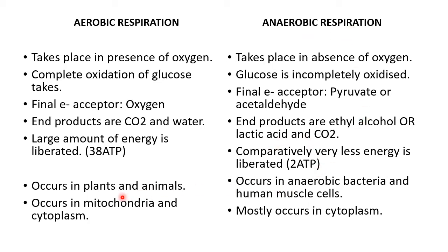Aerobic respiration occurs in organisms which require oxygen — examples are plants, animals, and some bacteria. Anaerobic respiration occurs in anaerobic bacteria and human muscle cells. Aerobic respiration takes place in the mitochondria and cytoplasm, whereas anaerobic respiration only takes place in the cytoplasm.